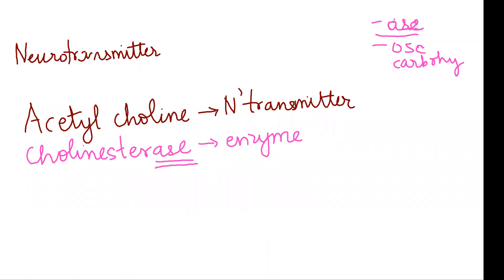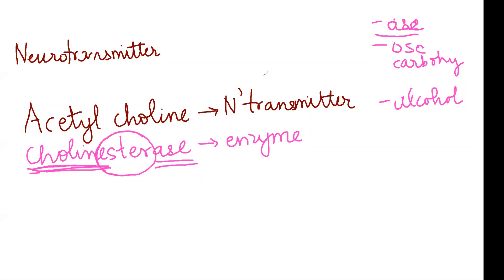Words ending with '-ase' means an enzyme. We are working on acetylcholine and choline, and that is a bond called an ester bond. Now you will study chemistry in chemistry — there are some compounds in carbon chemistry which we call alcohol. Alcohol means an OH group. Ester is a group of carbon compounds with a specific bond, so this is a specific ester bond.